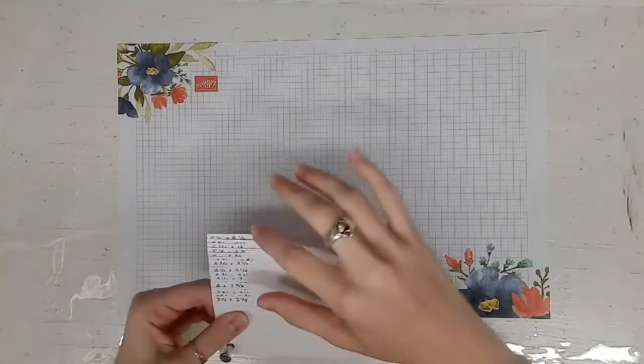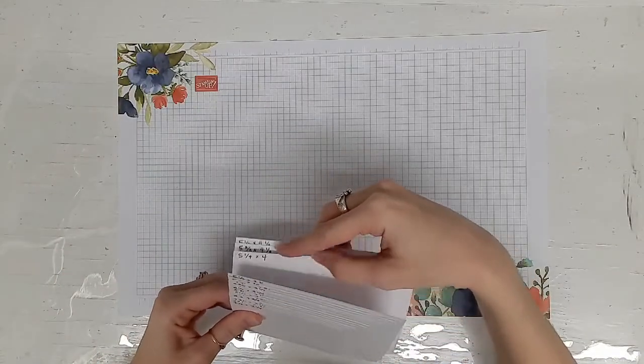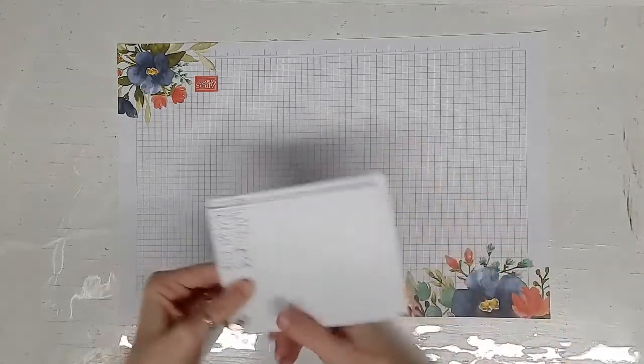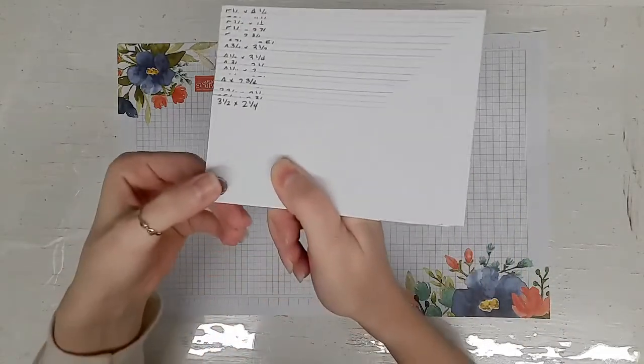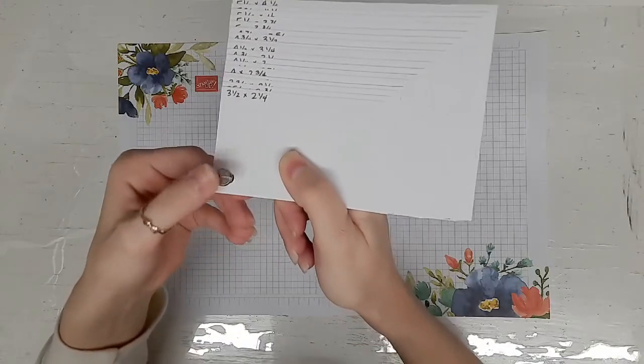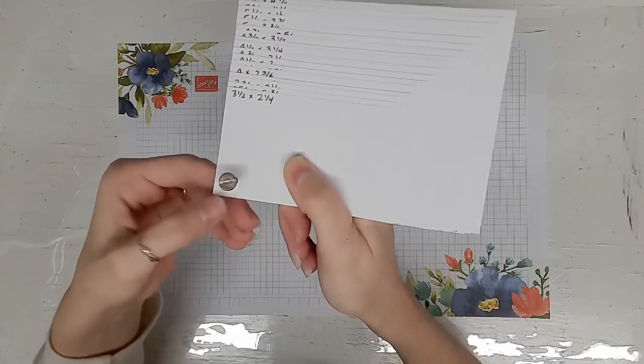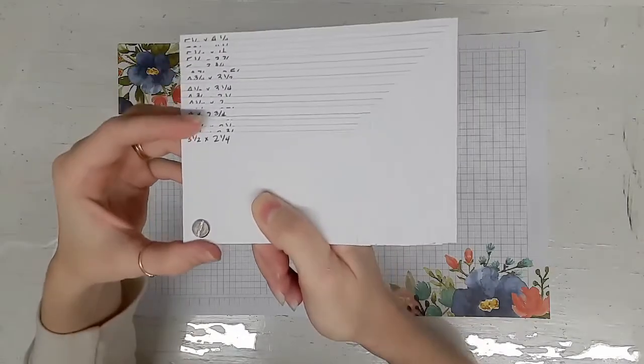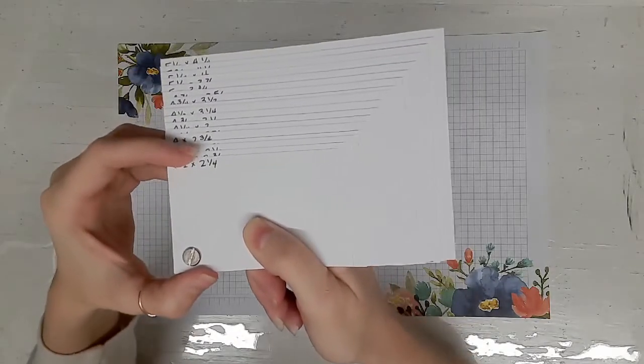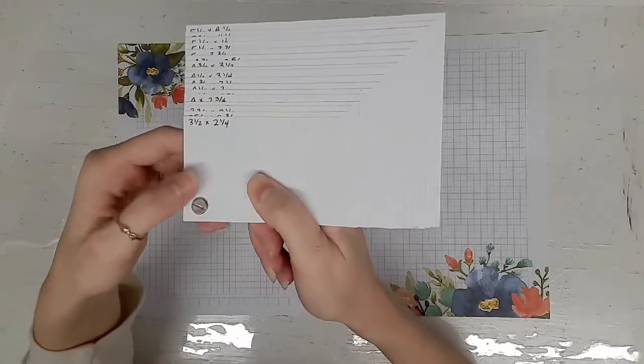And then all I did was label with the size in a consistent location, punched a hole in the bottom. I'm using this post from a scrapbooking extension kit. But you could use a binder ring is what I was intending to use but I just really couldn't find one. So I figured this will work at least in the meantime.